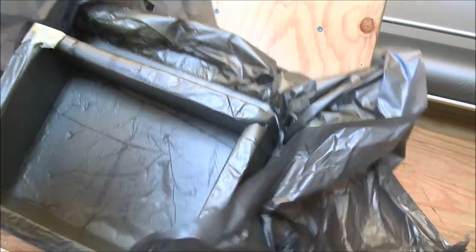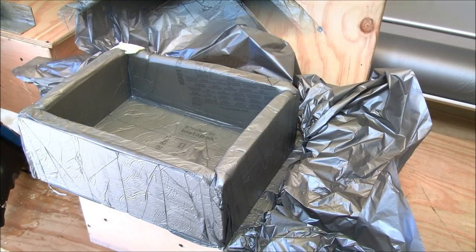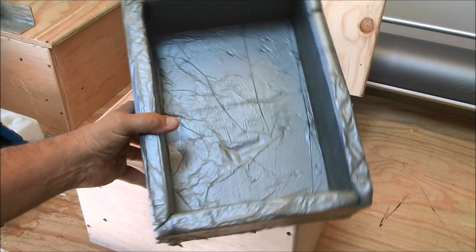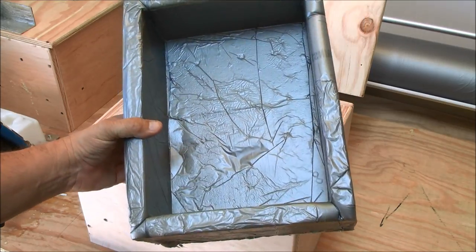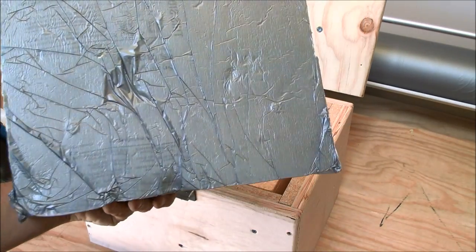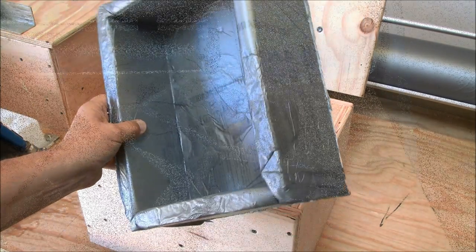You've got the molded foam that's going to fit the box. Just take some scissors and trim it. And that's what it looks like trimmed. We're going to have to make two of these. One for the top and one for the bottom.